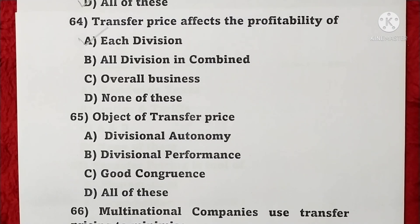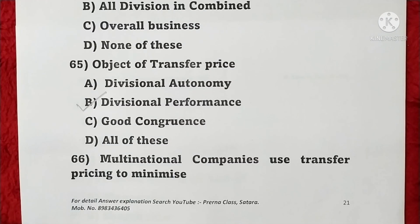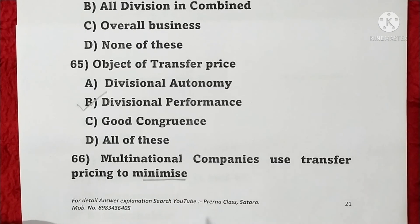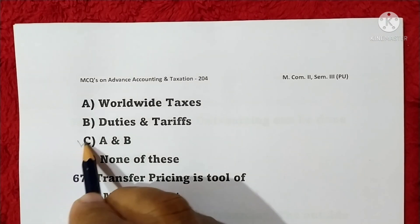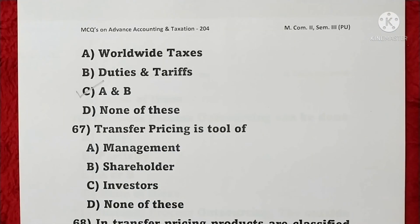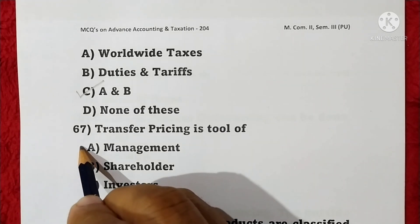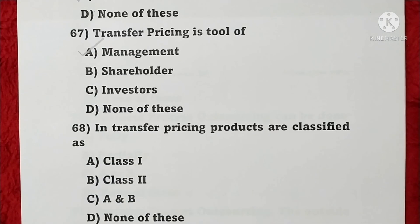Question 65: The object of transfer pricing is divisional performance — option D is correct. Question 66: Multinational companies use transfer pricing to minimize worldwide taxes, duties, and tariffs — A and B are correct, so option C is correct. Question 67: Transfer pricing is a tool of management — option A is correct. Question 68: In transfer pricing, products are classified as Class 1 and Class 2 — A and B, so option C is correct.